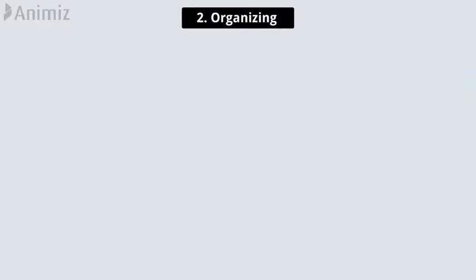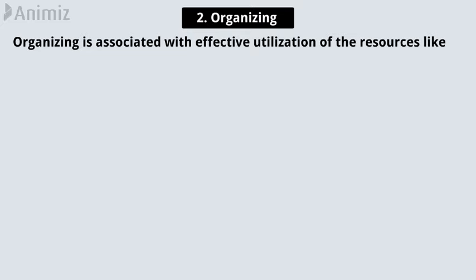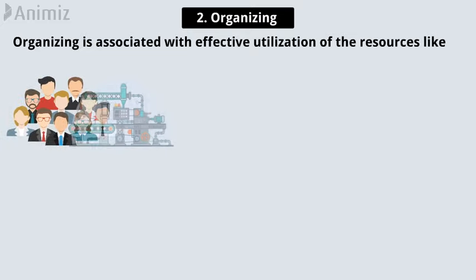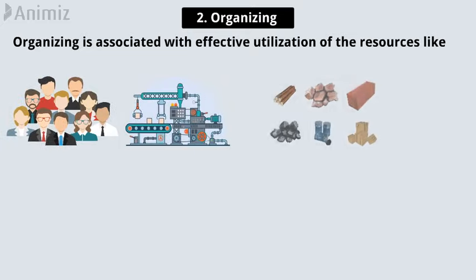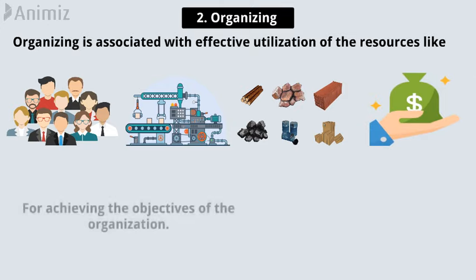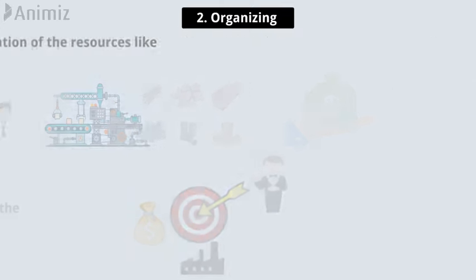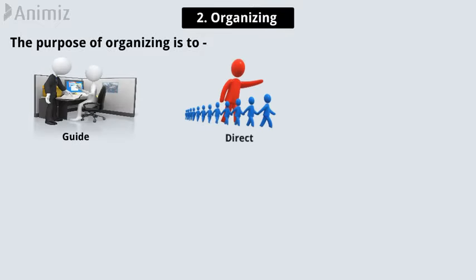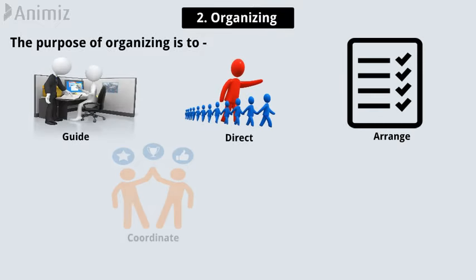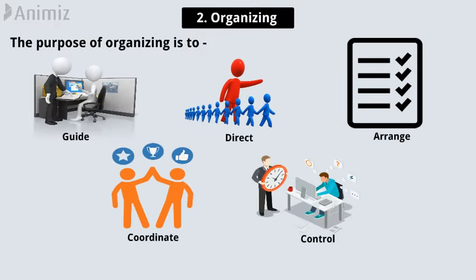Number 2 is Organizing. Organizing is associated with effective utilization of the resources like men, machines, materials and money for achieving the objectives of the organization. The purpose of organizing is to guide, direct, arrange, coordinate, and control the activities related to production.